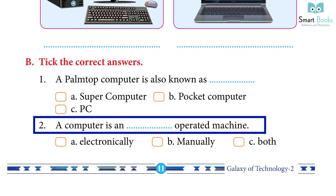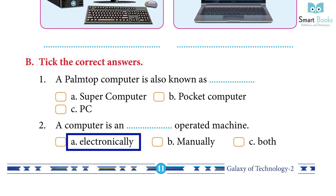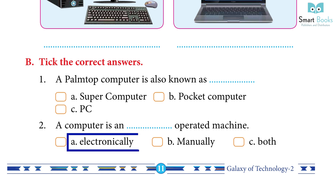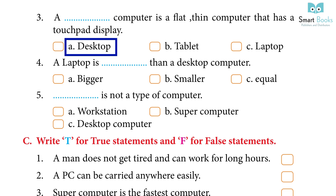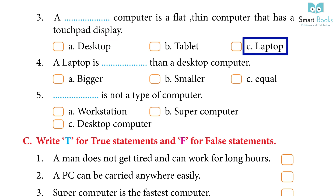Question 2: a computer is a dash-operated machine — a) electronically, b) manually, c) both. Answer: a) electronically. Question 3: a dash computer is a flat, thin computer that has a touchpad display — a) desktop, b) tablet, c) laptop. Answer: b) tablet.